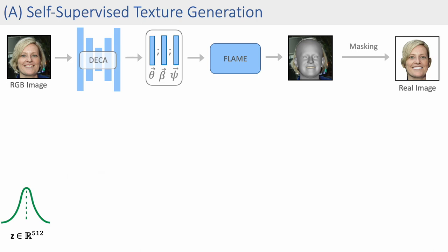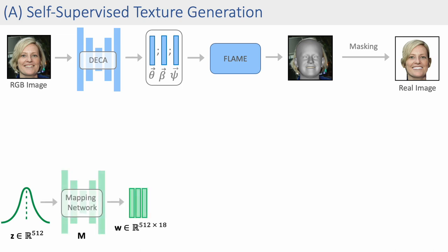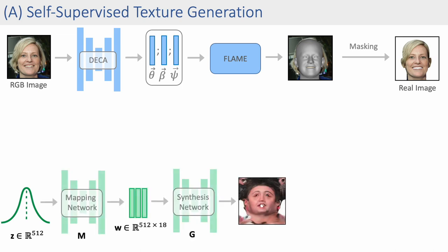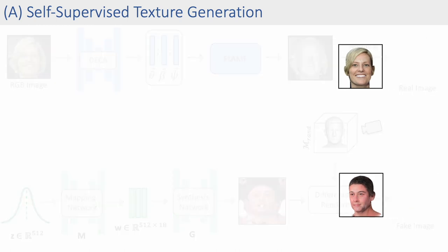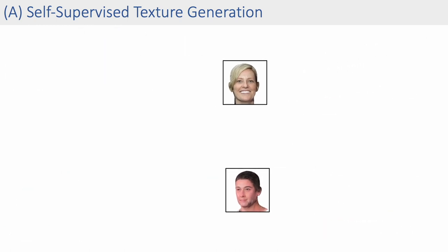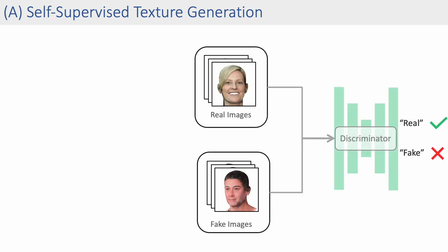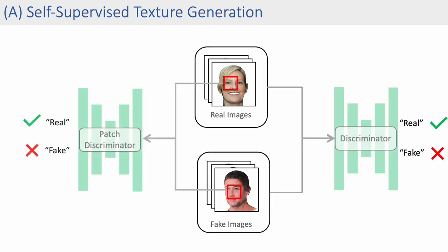In parallel, we sample a latent code from a Gaussian distribution and pass it to our texture generator based on the StyleGAN2 architecture. We then generate photorealistic images of the face using differentiable rendering. Both real and fake images are critiqued by two discriminators, which work on full image and local patches to generate high-fidelity details and textures.